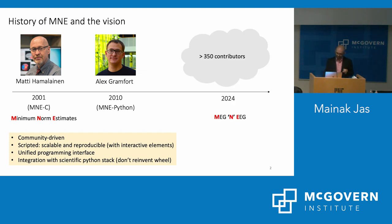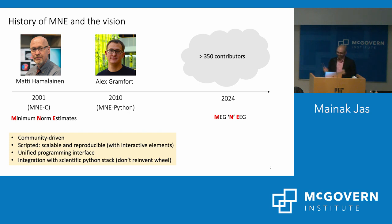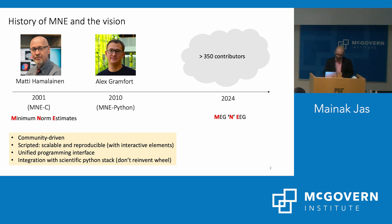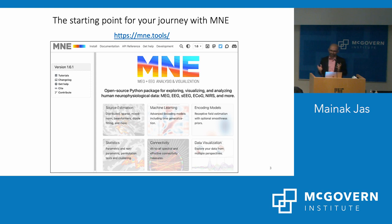MNE has been integrated with the scientific Python stack — we don't rewrite functions for things like temporal filtering; we rely on scipy and other standard libraries instead. Today, MNE stands for MEG and EEG and covers everything: preprocessing, source estimation, data visualization, connectivity analysis, and statistics. Thanks to this community-driven vision, we have more than 350 contributors to date.